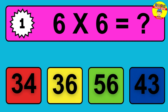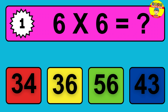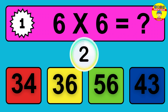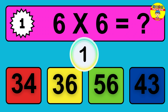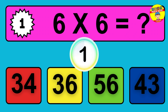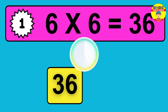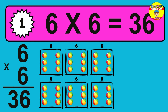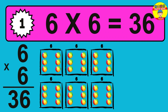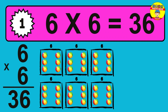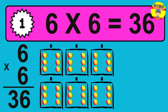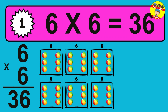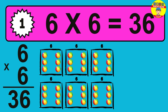Question 1. 6 times 6 equals what? So the answer is 6 times 6 is 36. To calculate, we have 6 groups with 6 balls each one. So how many balls do we have? 36 balls.